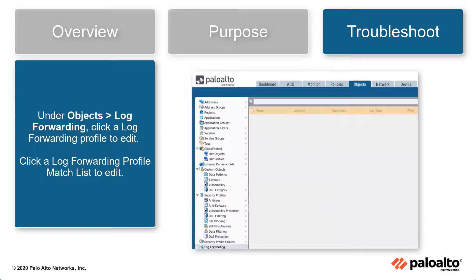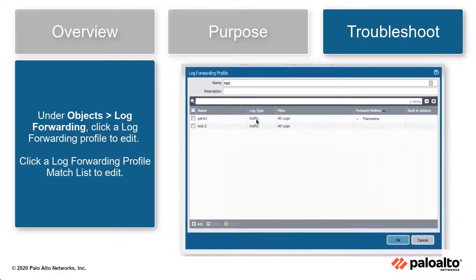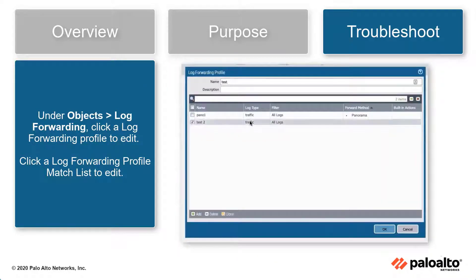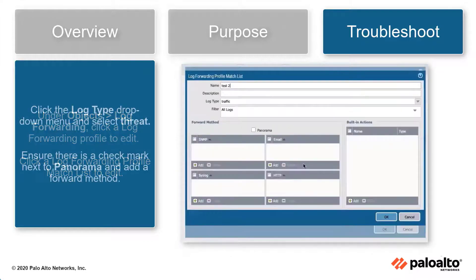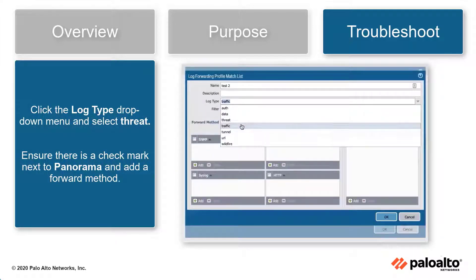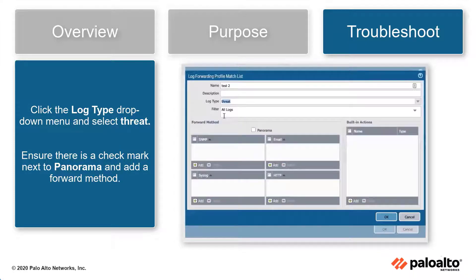Under Objects, Log Forwarding, click a log forwarding profile to edit. Click a log forwarding profile match list to edit. Click the drop-down menu next to log type and change it to a more granular configuration such as threat. Next, ensure there is a check mark next to Panorama so that all logs are being sent to the management or external device. Add the forward method here as well. This will ensure the best practice check passes.